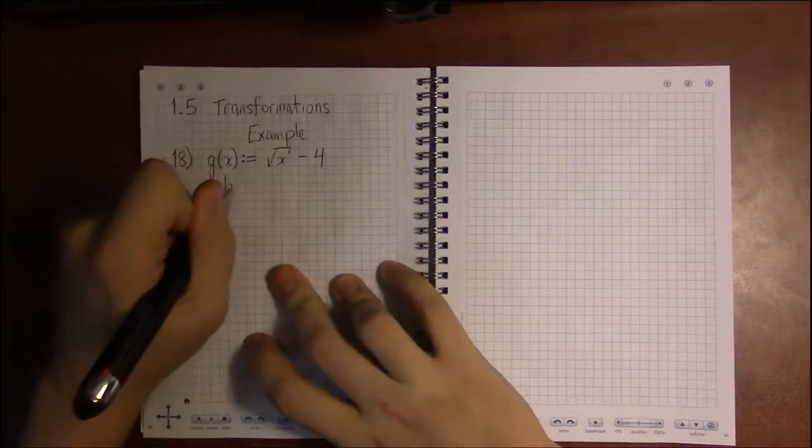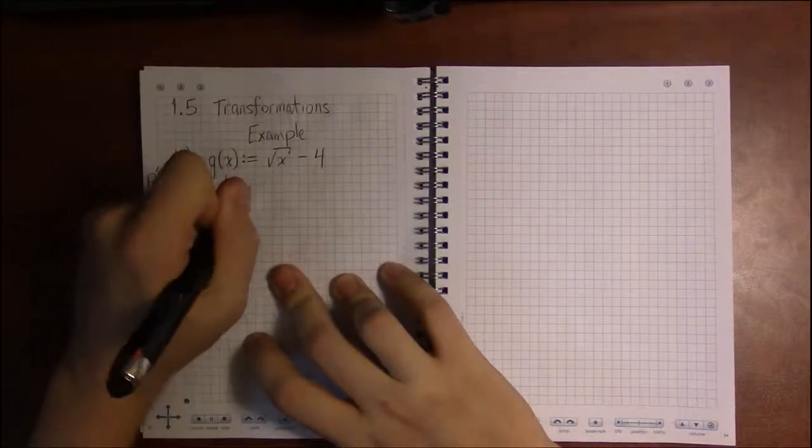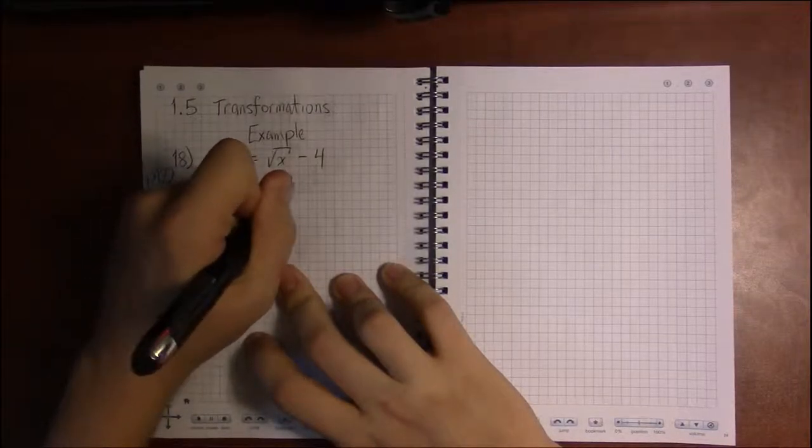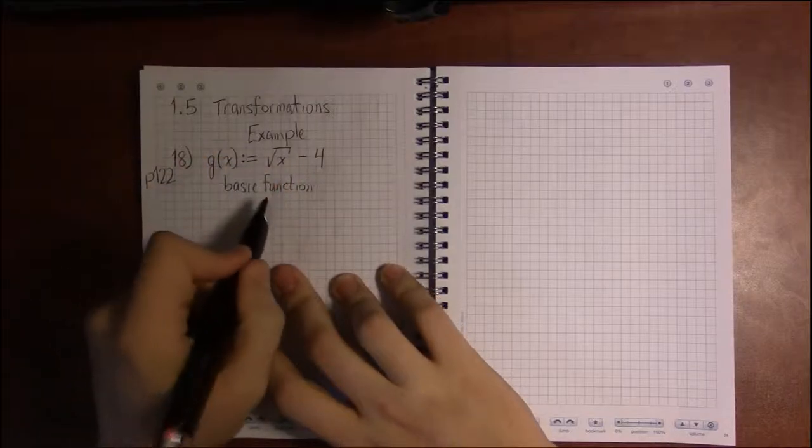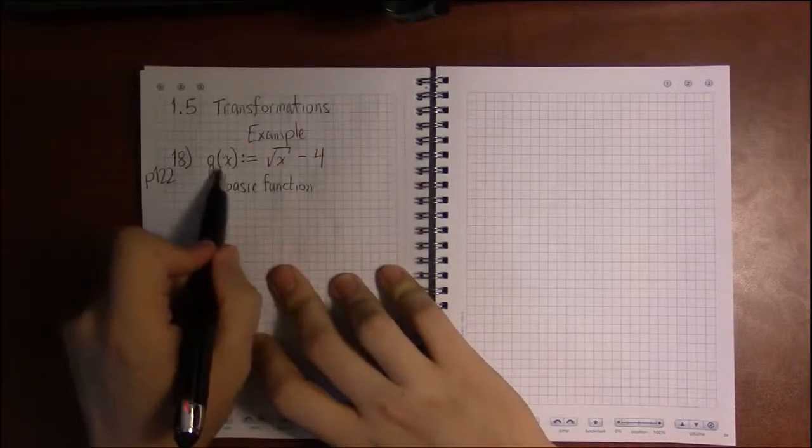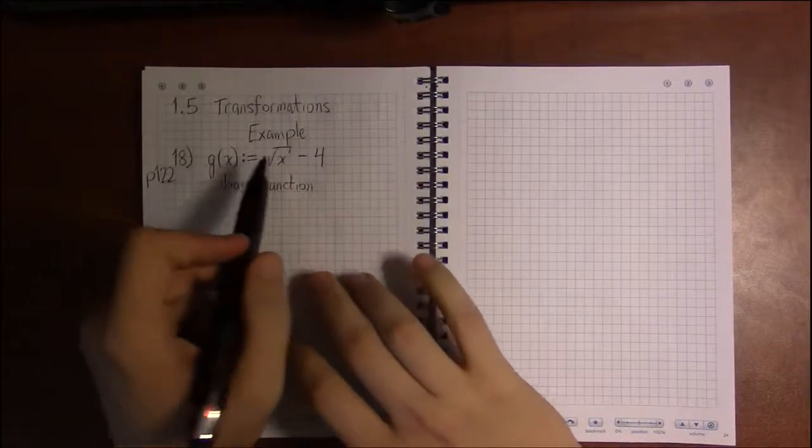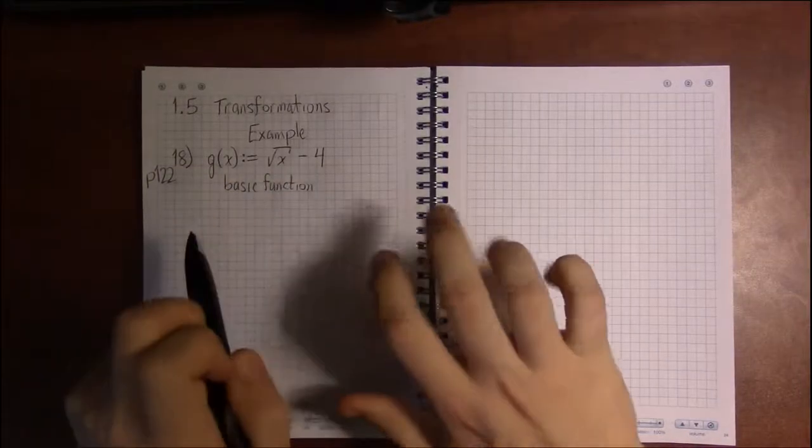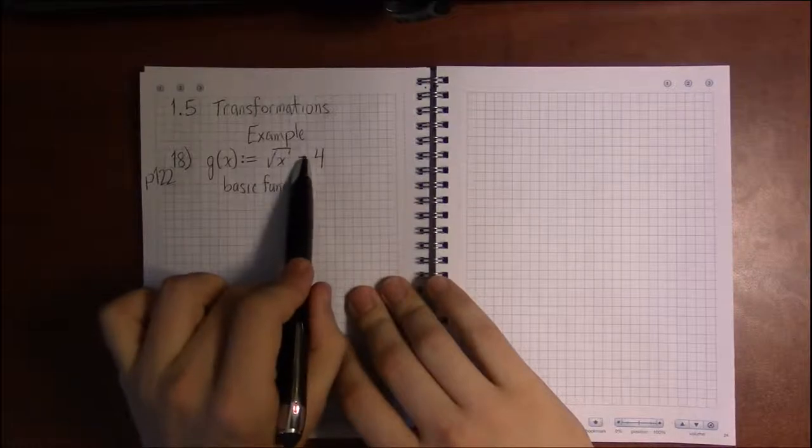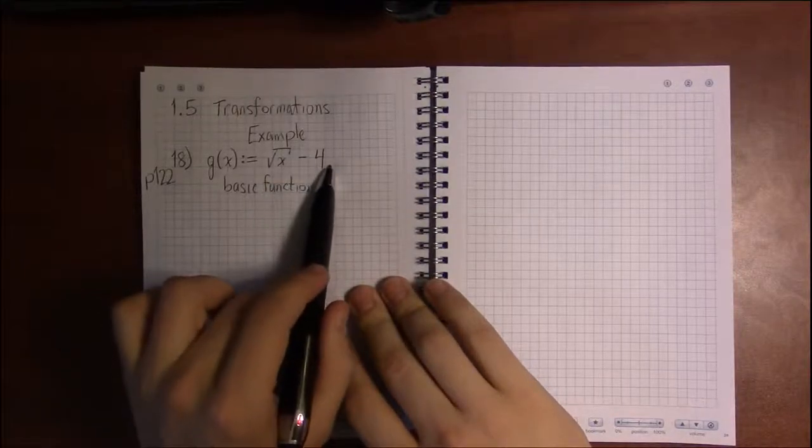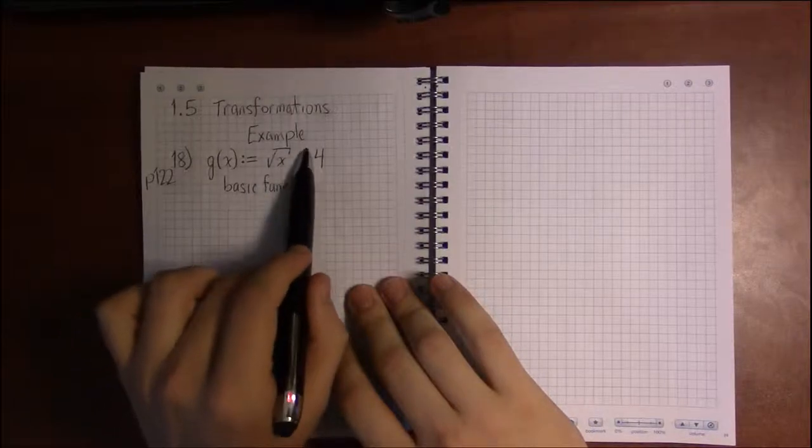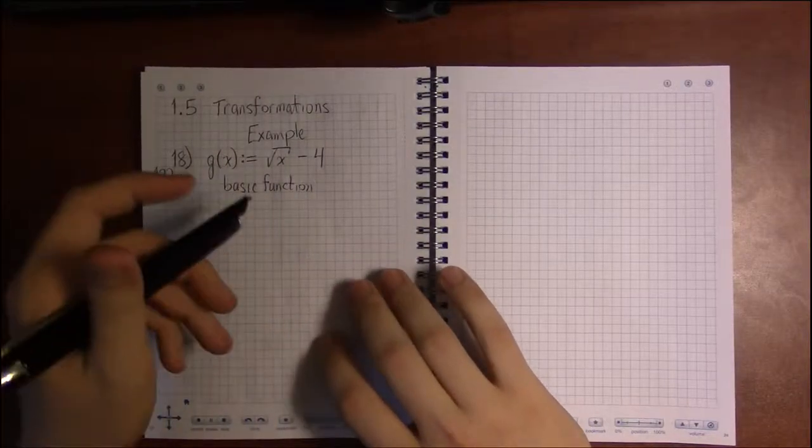The instructions say that we're to graph this function from the library of functions from section 1.4, and then graph this function using the ideas of transformations. To get the basic function, the one which we're going to transform into g, we're basically just going to strip away all the unessential stuff. The minus 4, that's a transformation. So all we're left with is the square root of x.